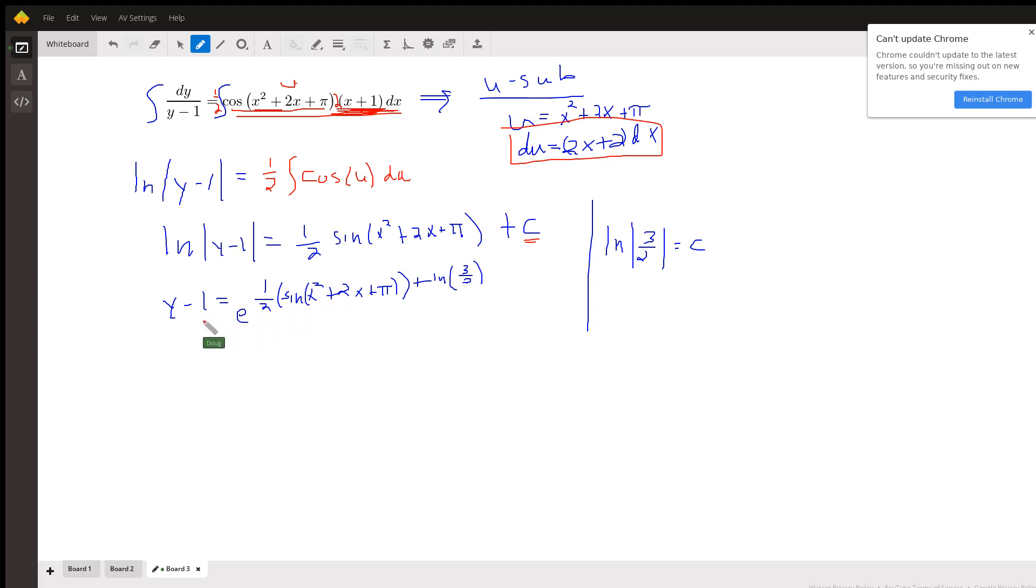So I actually don't need the absolute value symbol. So there is exponentiating this. In other words, e raised to this power produces y, the antilogarithm y minus 1. And if I add 1 to both sides, that's what I get for y.